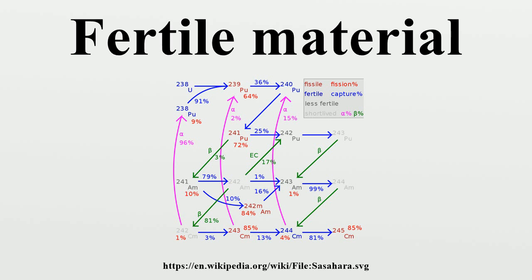Naturally occurring fertile materials that can be converted into a fissile material by irradiation in a reactor include thorium-232, which converts into uranium-233; uranium-234, which converts into uranium-235; and uranium-238, which converts into plutonium-239.